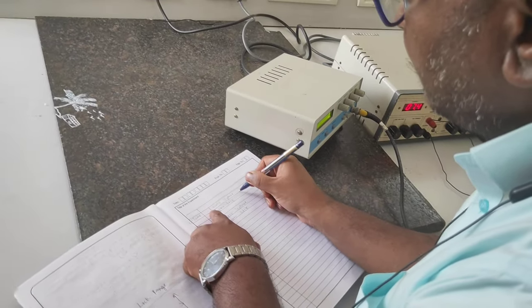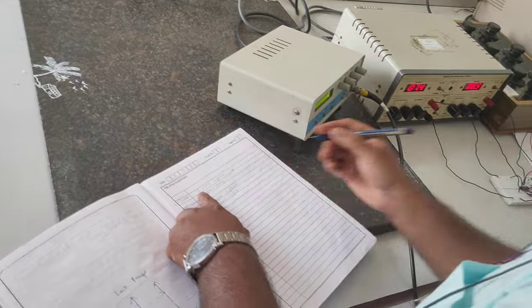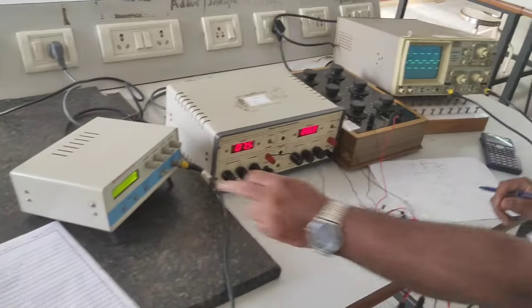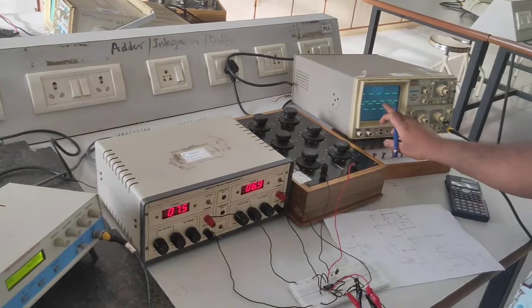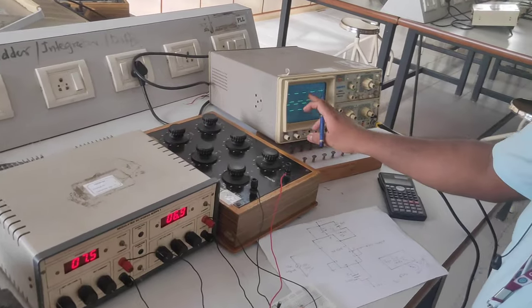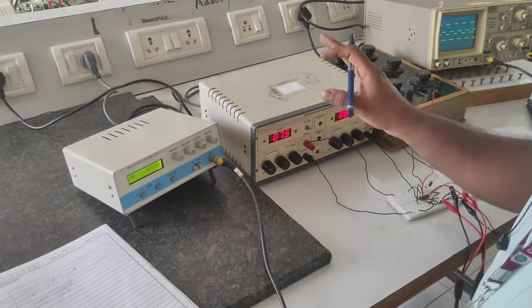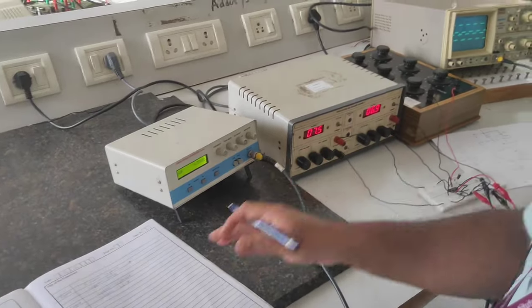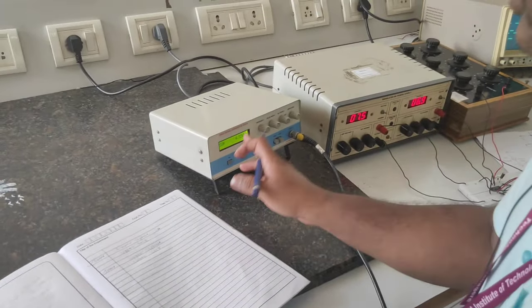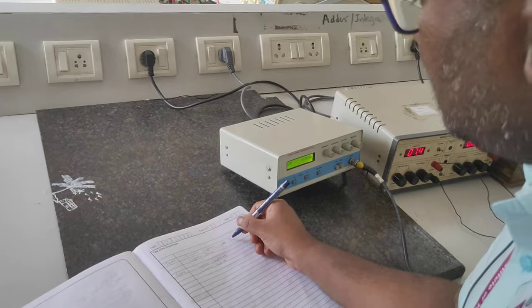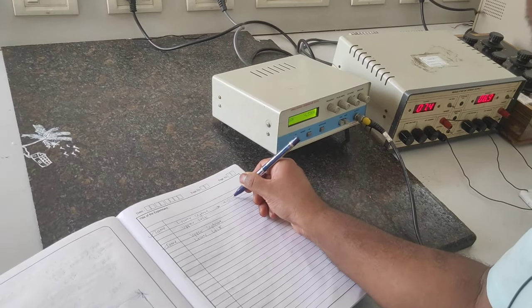Now note down this respective frequency as lower capture. When the input and output are same, you note down that frequency as lower capture. You can note down from here, display itself, or else you can measure it and note down here. So this becomes practical and it is display, it is having some tolerance, no problem. So I am writing directly this frequency only. So this is 4.55 kilohertz.